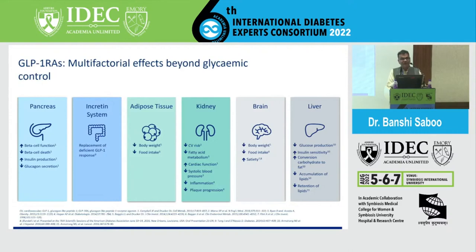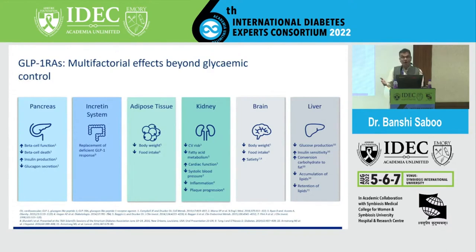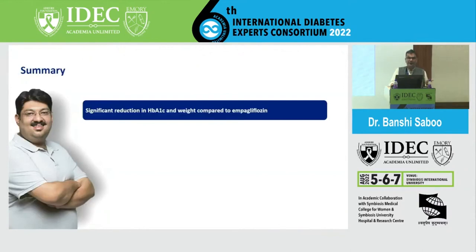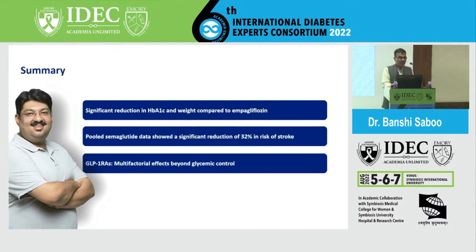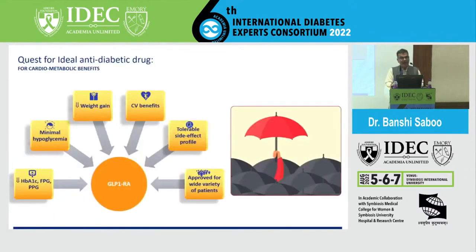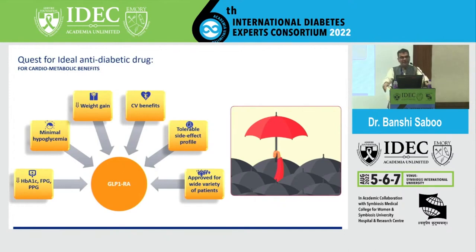GLP-1 has multifactorial effects beyond glycemic control — on the pancreas, adipose tissue, kidney, and brain. Trials are ongoing for Alzheimer's disease, NASH, and NAFLD. To summarize: significant reduction of A1c and weight; pooled semaglutide data showed 32% risk reduction for stroke. GLP-1 is an ideal oral anti-diabetic agent: reduction in A1c, no hypoglycemia, both fasting and post-prandial glucose decrease, weight reduction, CV benefits, tolerable side effect profile, and approved for a wide variety of patients.